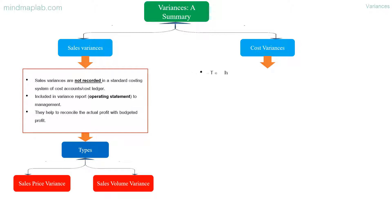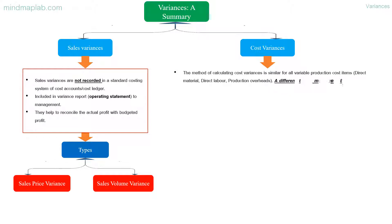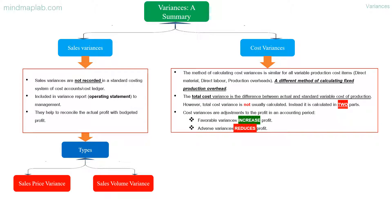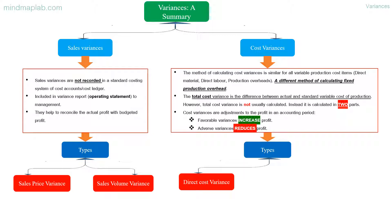Cost variances: the method of calculating cost variances is similar for all variable production cost items — direct material, direct labor, and production overheads — but a different method is used for calculating fixed production overhead. The total cost variance is the difference between actual and standard variable cost of production; however, it is not usually calculated. Instead it is calculated in two parts. Types of cost variances are: direct cost variance and indirect cost or overhead variance.